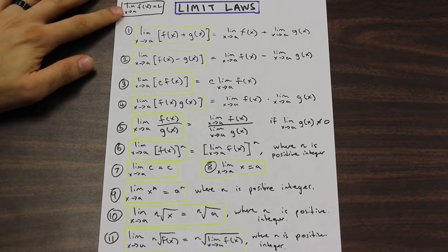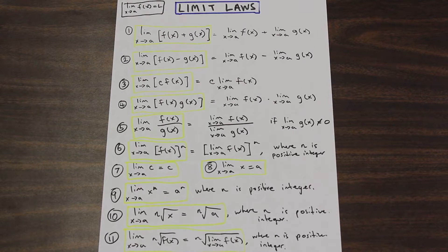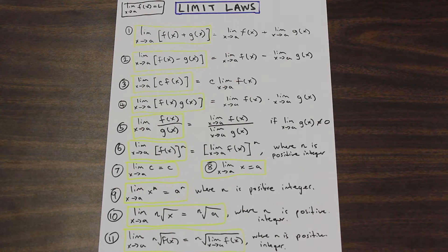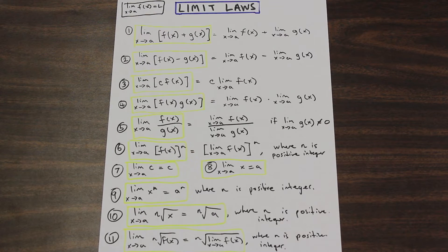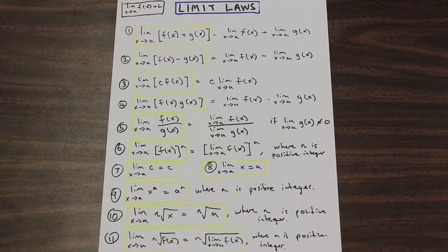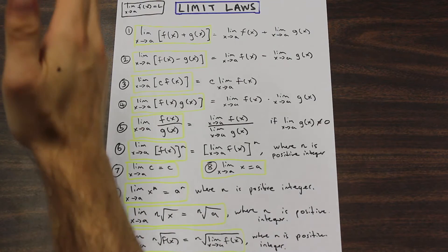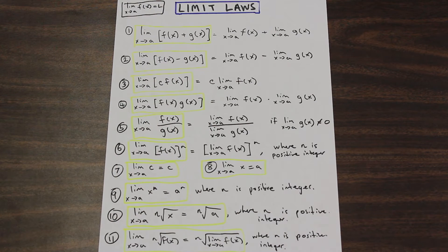What a limit essentially is is the value that a function or sequence approaches as the input or index approaches some value. So what that means is as x approaches a, where a is a constant — some number — the limit of f of x, or the limit of the function, is equal to some value. So as we approach a, whatever a may be, the limit of f of x is equal to L, which would also be a constant.